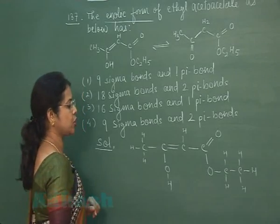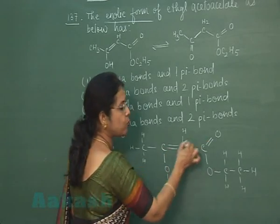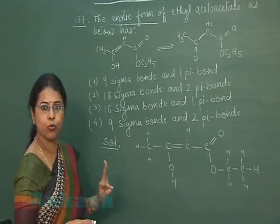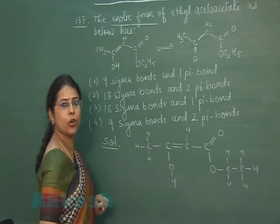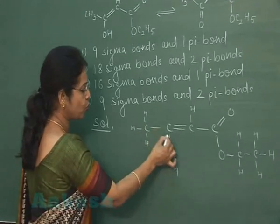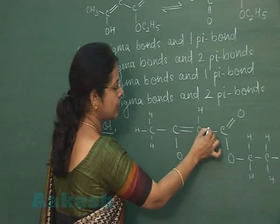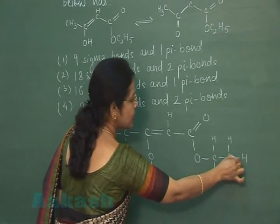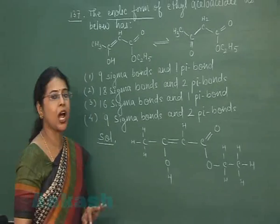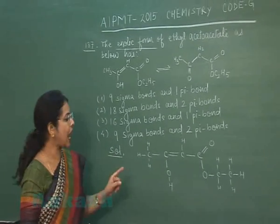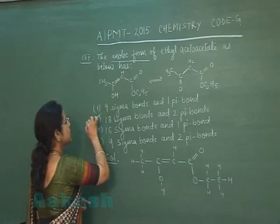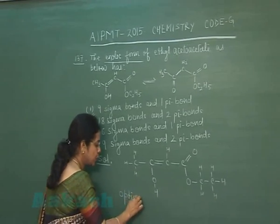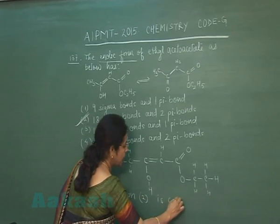In this structure, only 2 pi bonds are present, so the option may be either 2 or 4. Now let us count the number of sigma bonds: 1, 2, 3, 4, 5, 6, 7, 8, 9, 10, 11, 12, 13, 14, 15, 16, 17, 18. It means there are 18 sigma bonds and 2 pi bonds. So second option is the correct option.